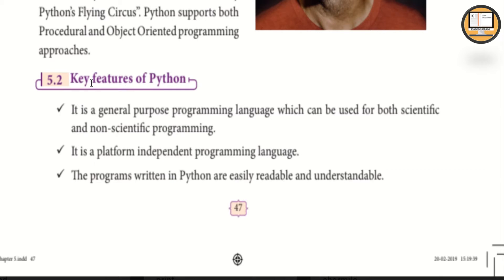Section 5.2 covers the key features of Python. The first feature is that Python is a general purpose programming language which can be used for both scientific and non-scientific programming. For scientific use, examples include Matplotlib and mathematical calculations. For non-scientific use, it covers designing projects and programming languages.